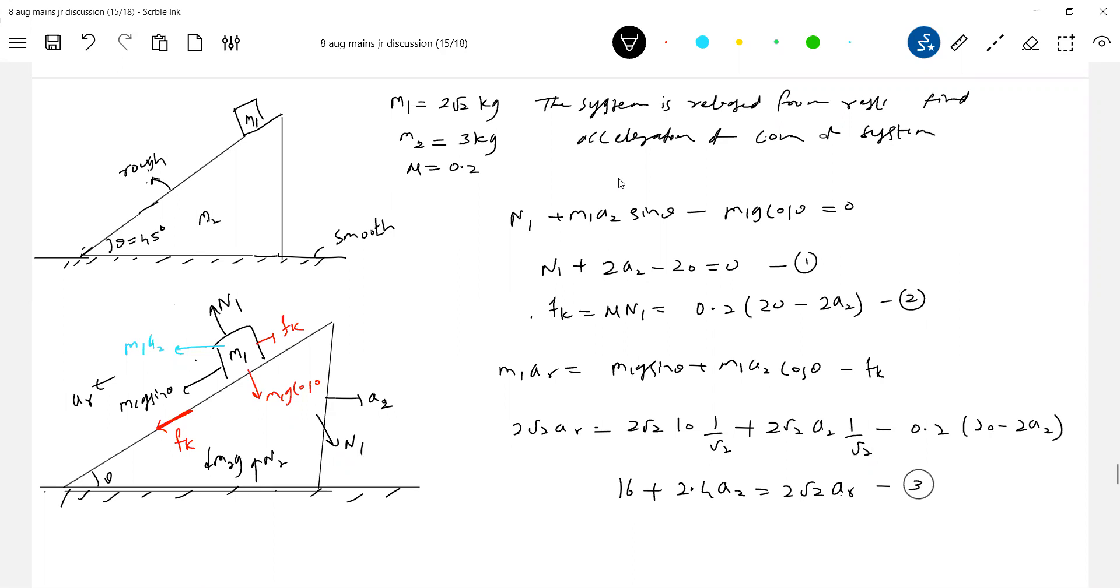Let's write on the wedge. So this is for the block along incline. This is perpendicular to incline. I am writing nearby the comments also. This is over. Now for the wedge we will write it.